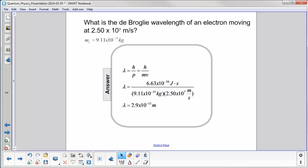And we come up with a wavelength of 2.9 times 10 to the minus 11th meters, which is on the order of the size of an atom. So the de Broglie wavelength here for the electron will cause various wave-like effects.